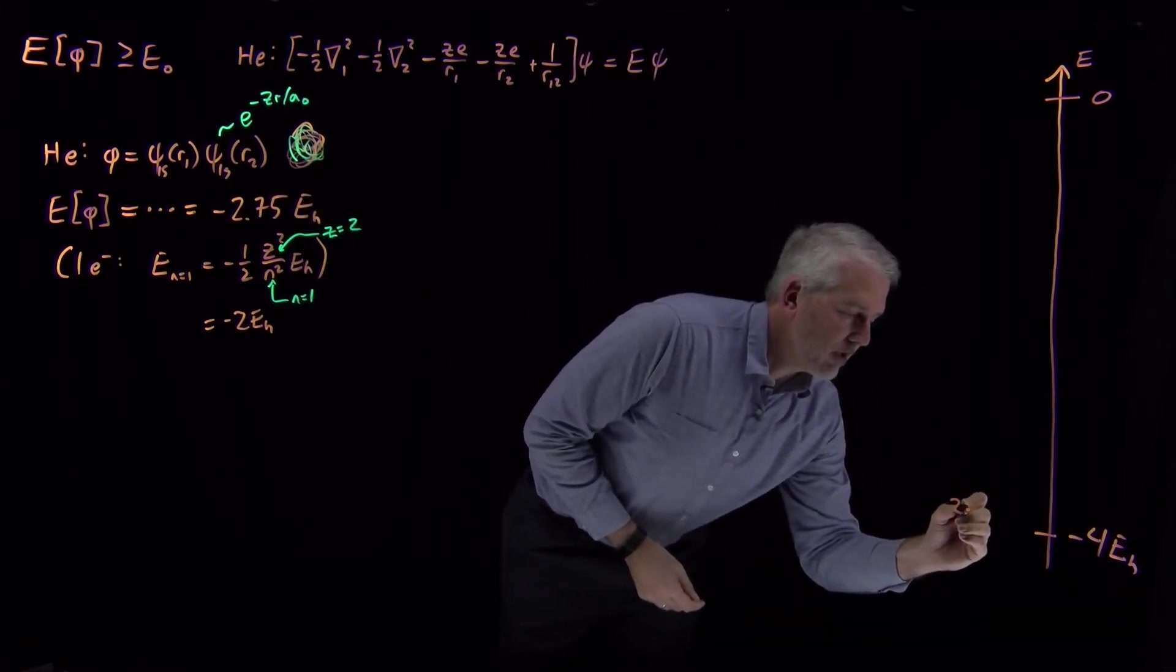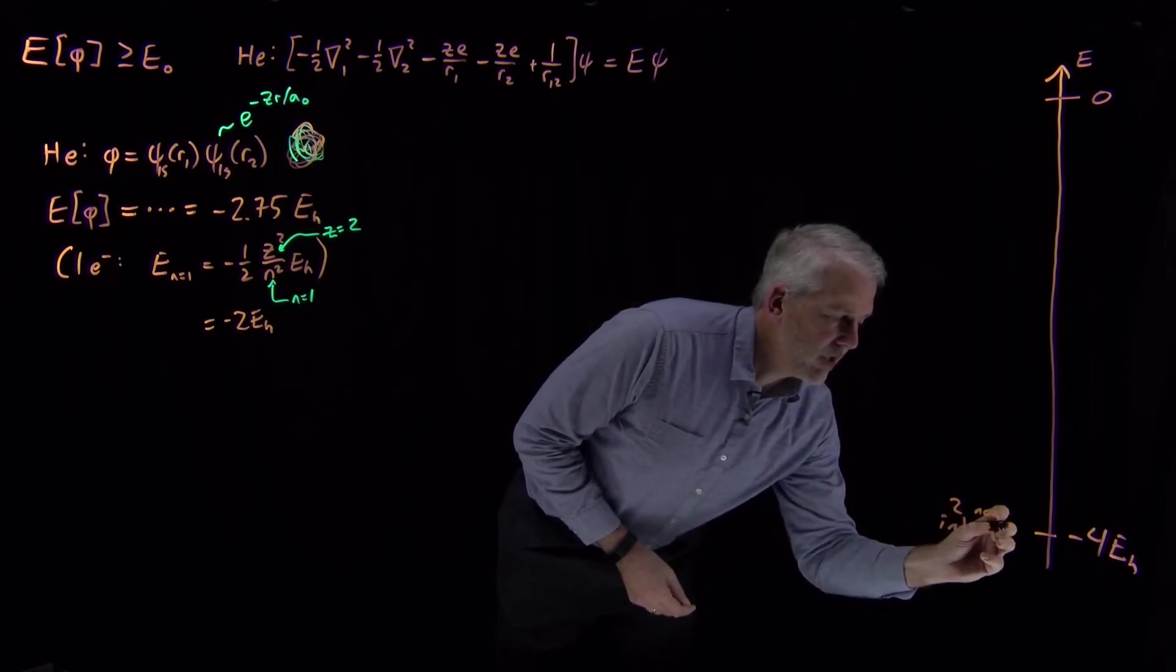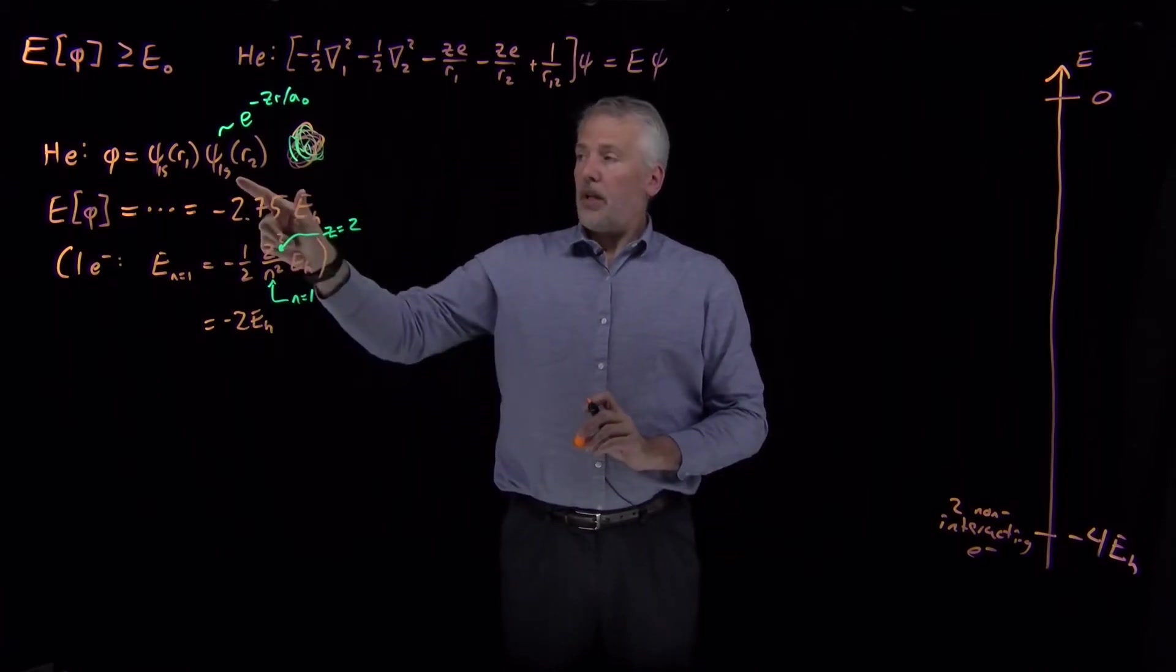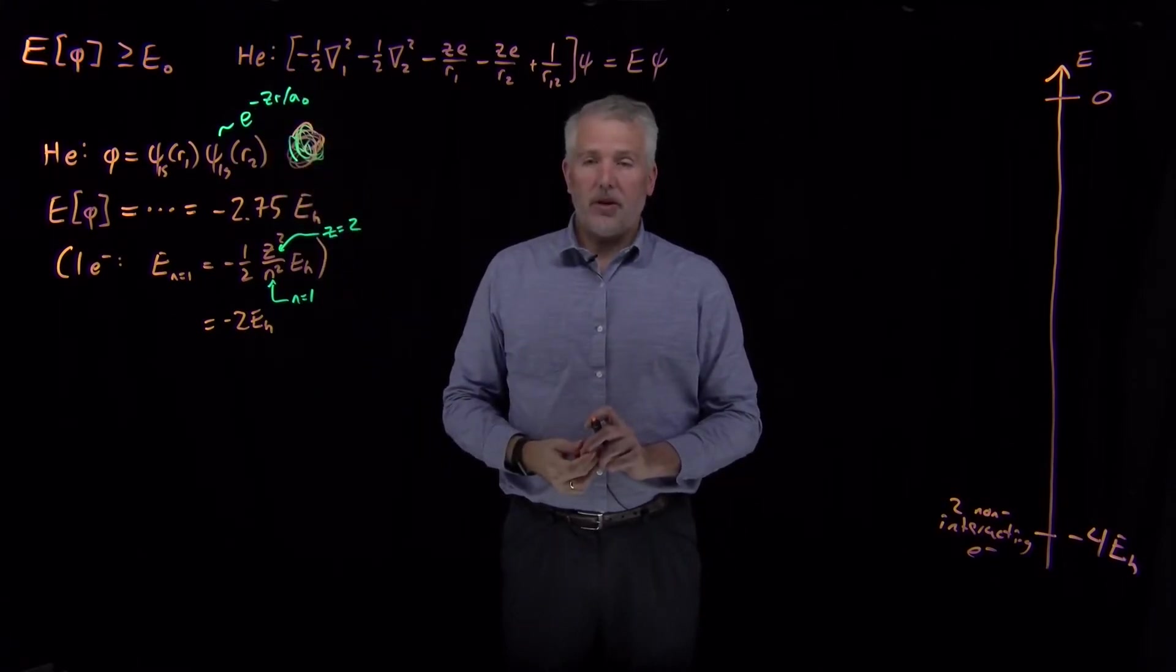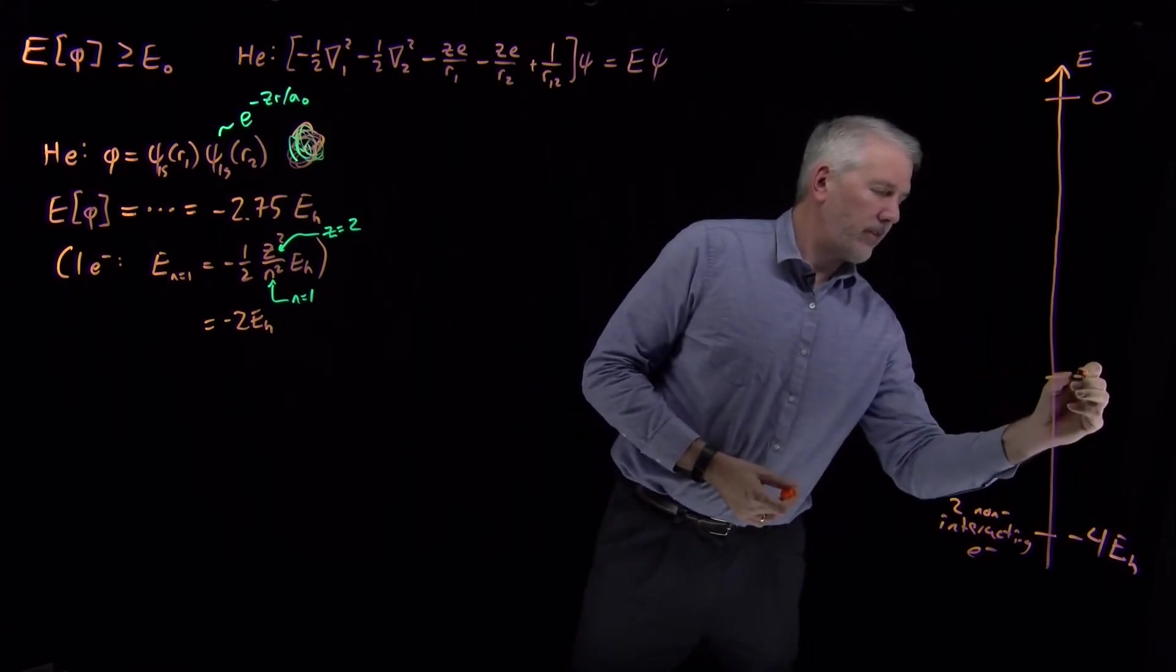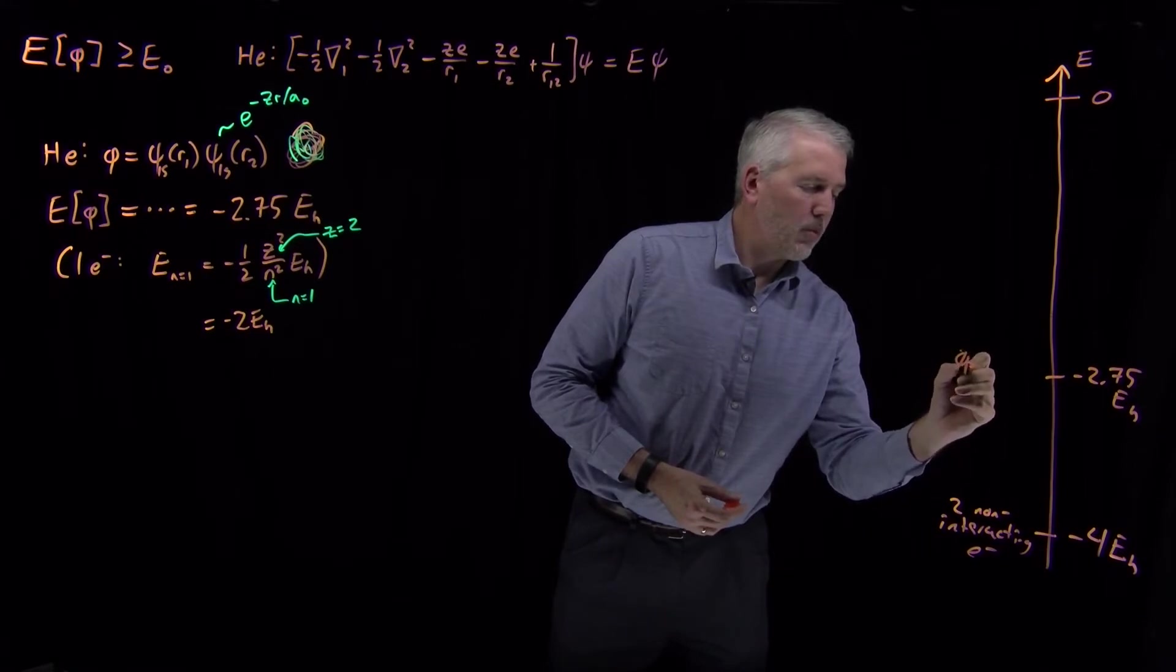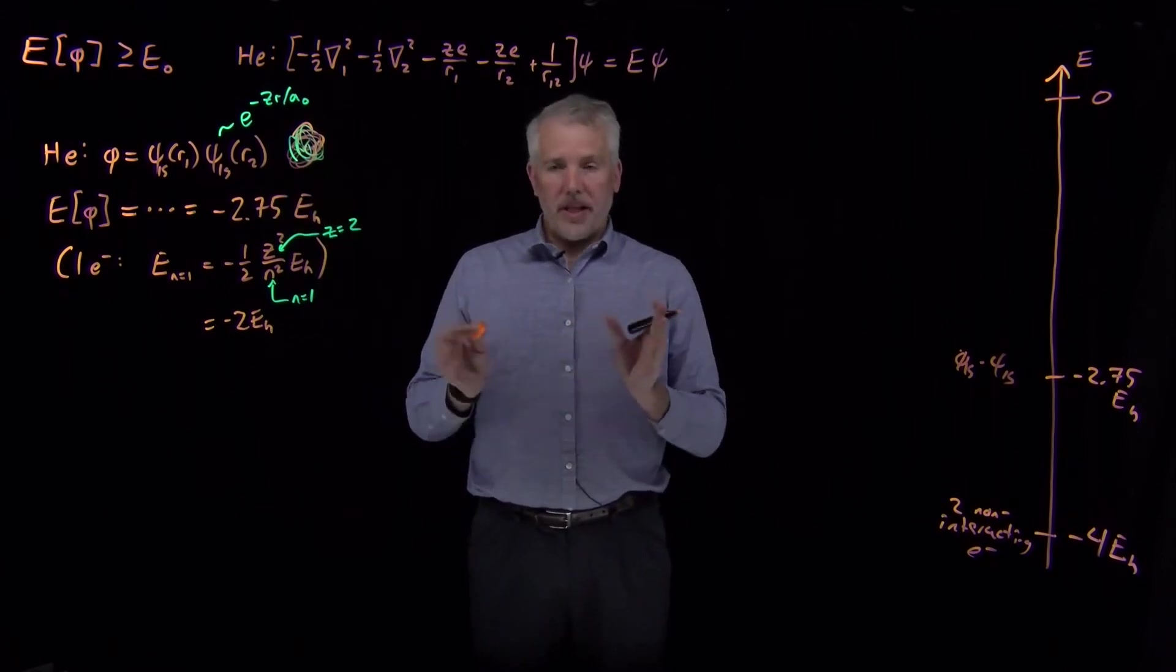An energy of minus 4 Hartrees would be the energy of two different electrons, each with negative 2 Hartrees. Two electrons totally ignoring each other, both orbiting the helium nucleus without paying attention to each other. So that would be the energy of two non-interacting electrons around the helium nucleus. What we've discovered is that if I let those electrons interact, but I guess that their wave function still looks like a 1s orbital, then this is about 2.75.